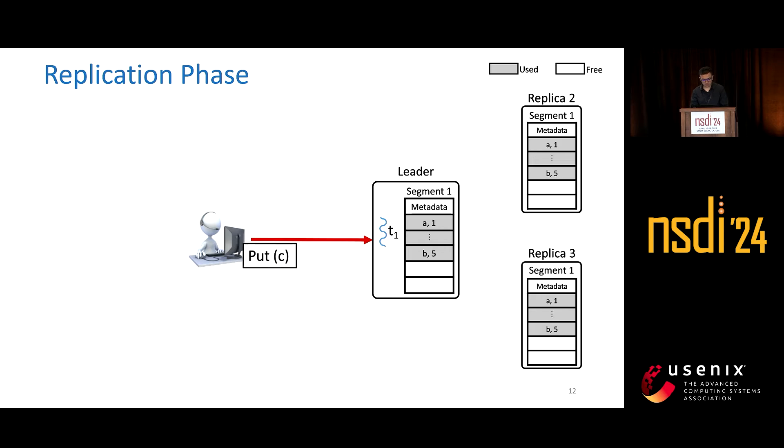The client sends a request to a thread on the leader. The thread finds an empty spot in one of the segments it owns and copies the key and value from the request there. Each thread also has an increasing sequence number, which is used to order operations for that thread. The thread inserts the sequence number into this entry.